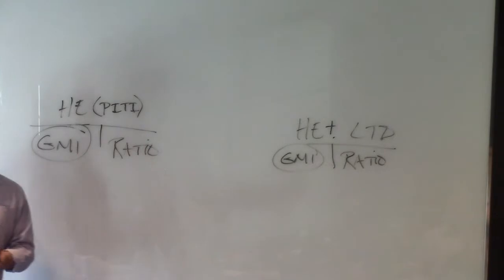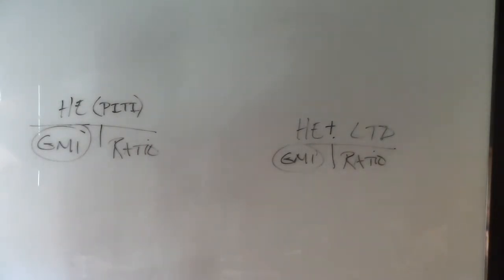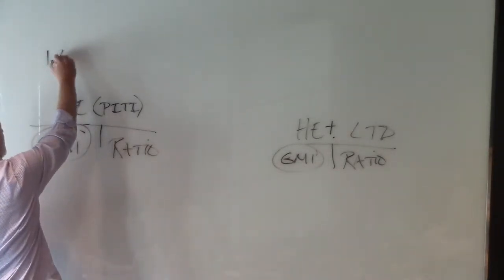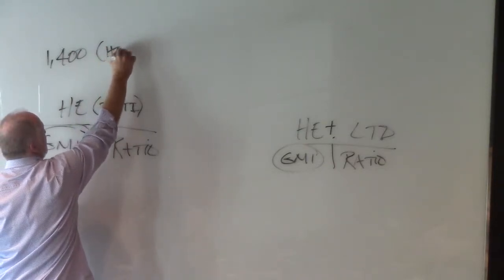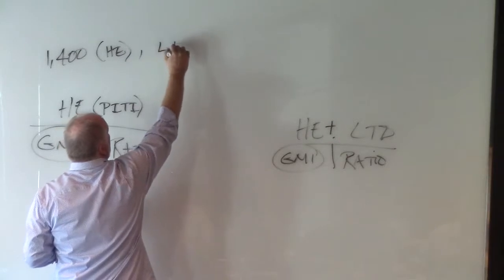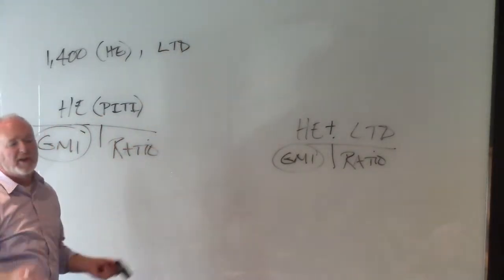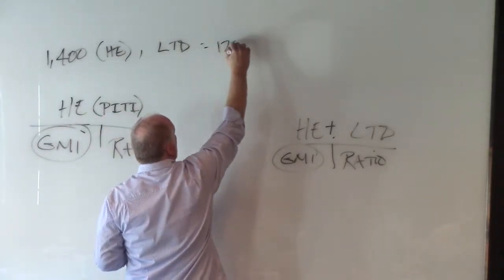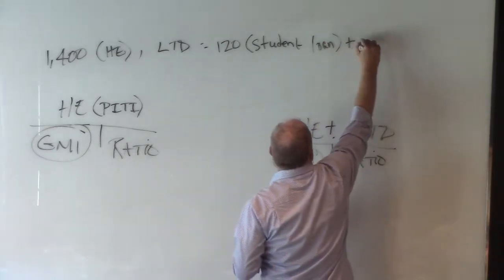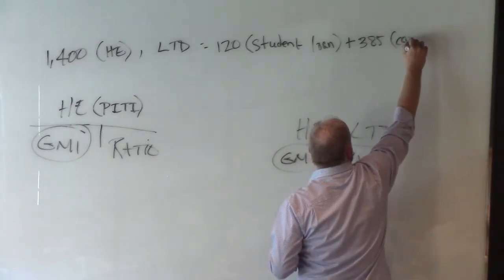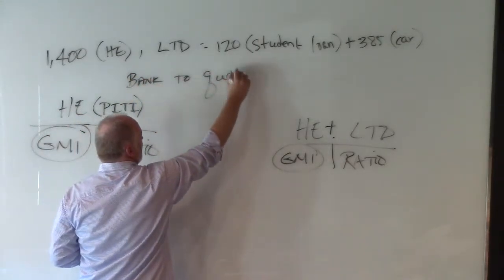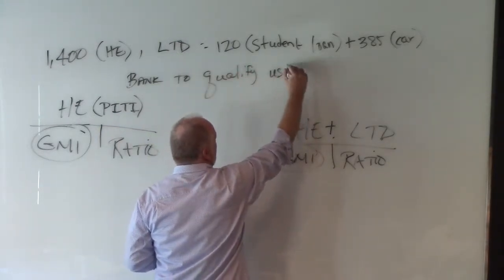In a minimum income question, here's what's going on. The question is: how much must Joe make if the house has a monthly payment of $1,400? That $1,400 is the housing expense — somebody's already found a house and calculated all this. It costs $1,400 a month on that house. He has long-term debt: a student loan of $120 and a car payment of $385. The bank qualifies using the ratio of 28/36.